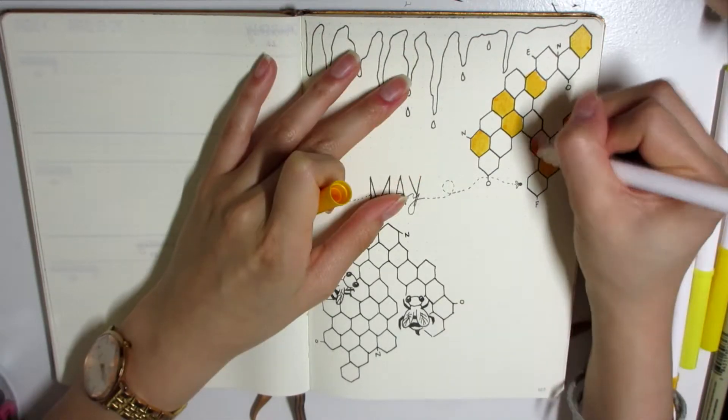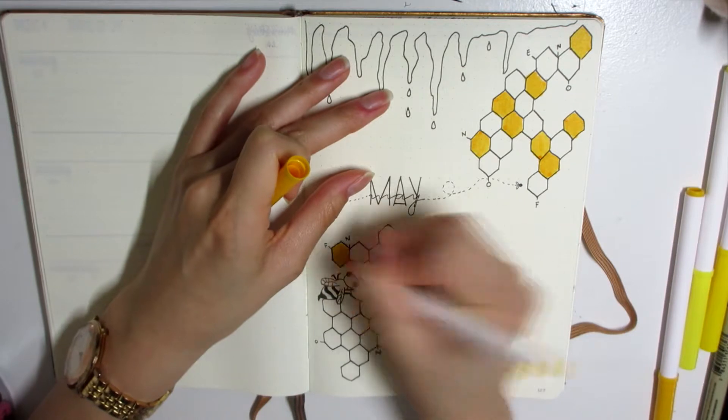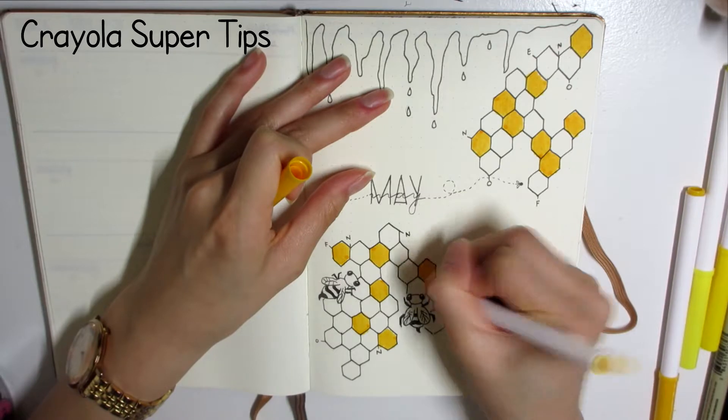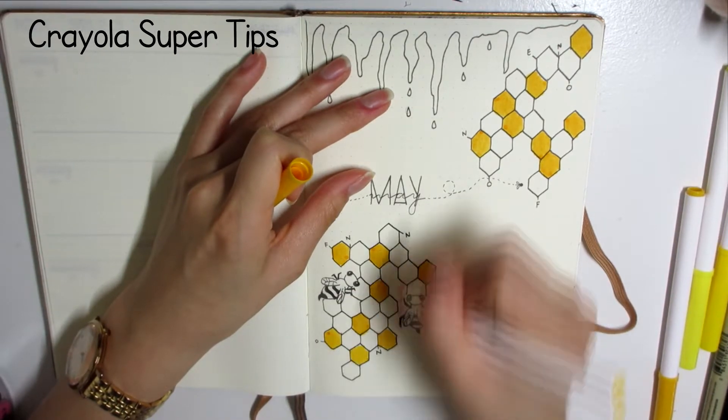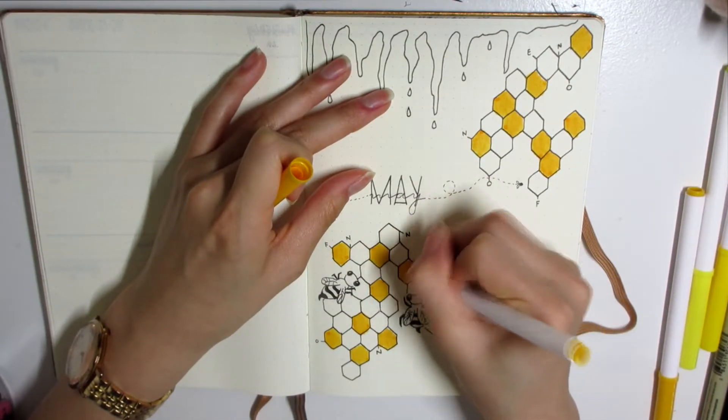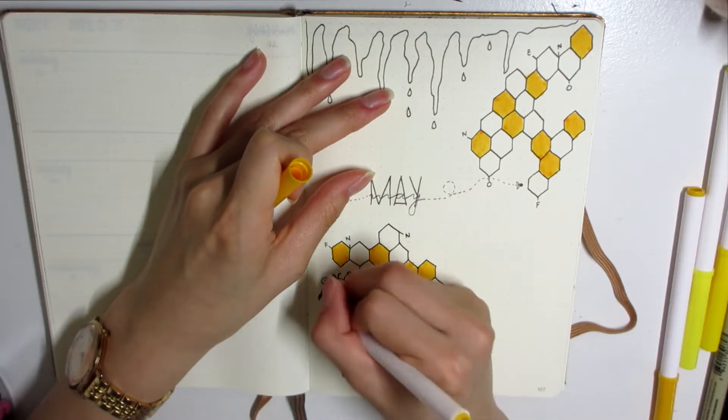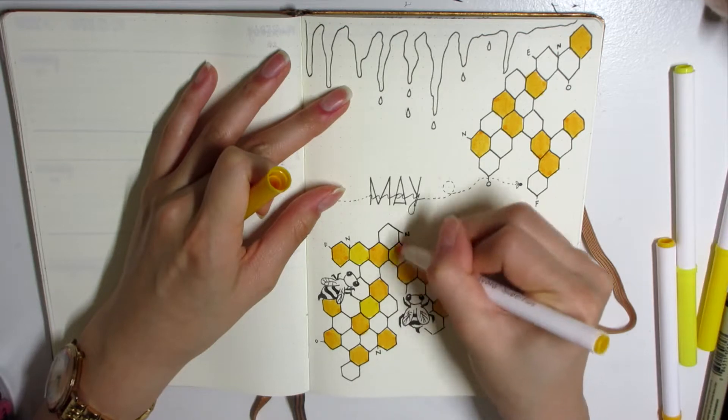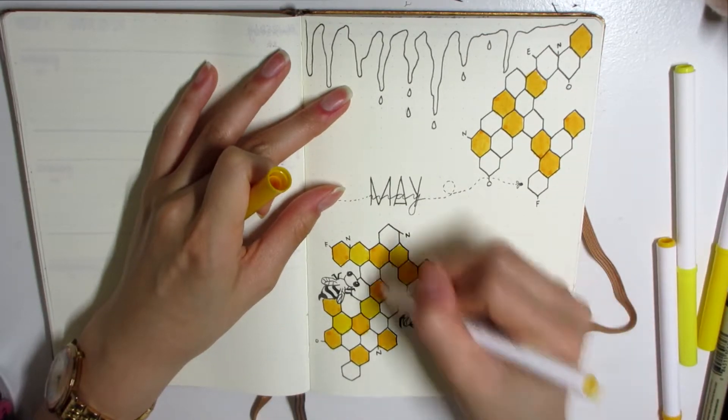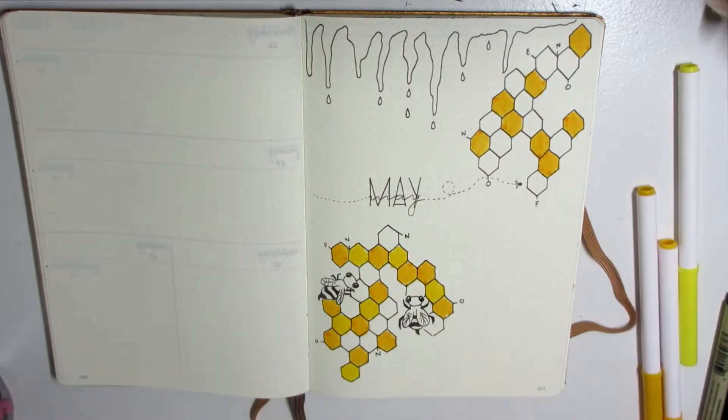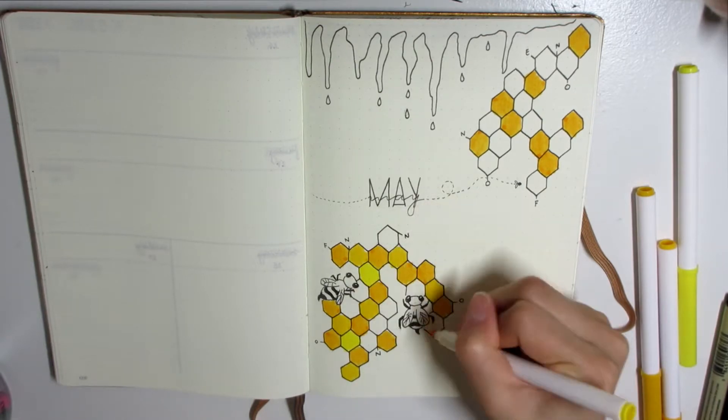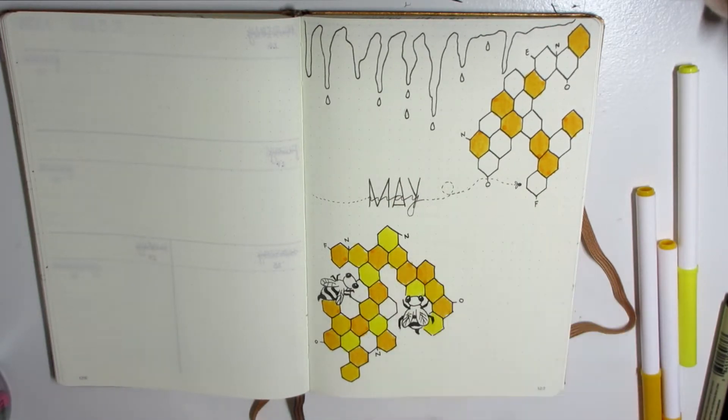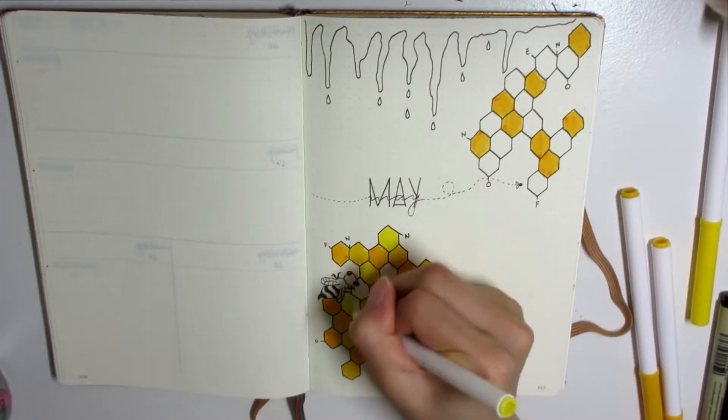Right now I'm just coloring in with my Crayola Super Tip markers. These markers are amazing - they're good on budget for trying to decorate stuff if you're trying to do it on a budget for bullet journal. I'm going in with various shades of yellow and trying to mismatch and make it look more honeycomb-like. I do have the little bees on there.